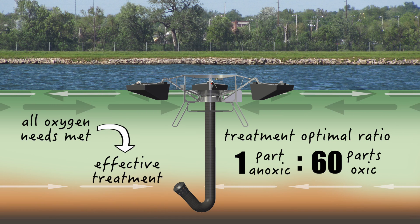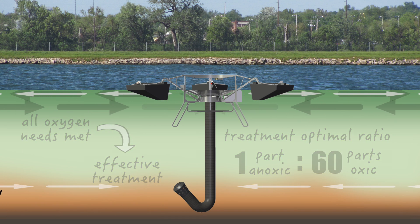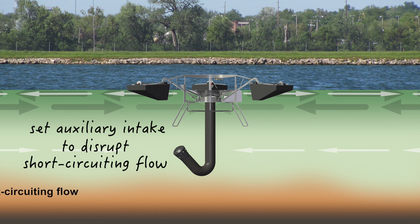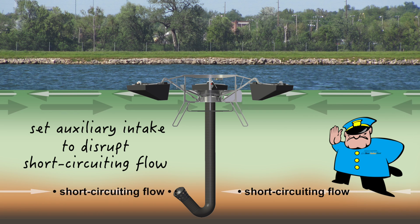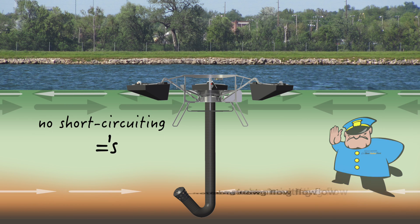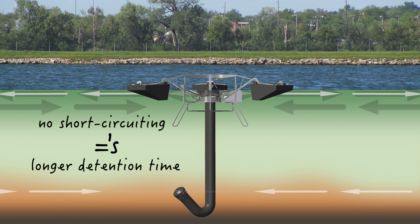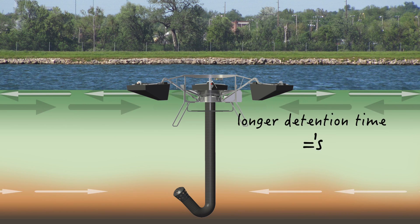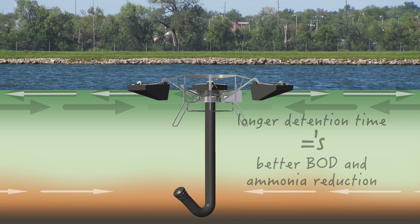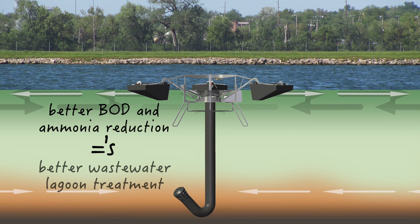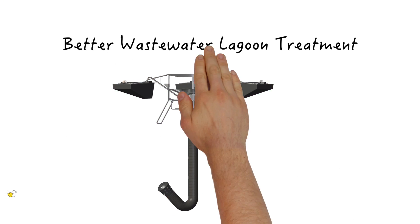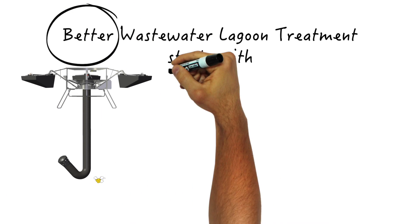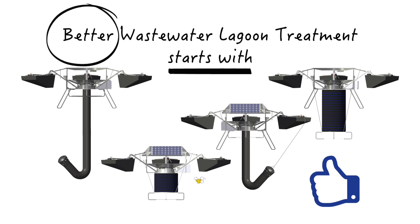This ensures all the oxygen demand needs to treat the incoming anoxic water are met. A deeper auxiliary intake setting near the bottom can also stop any short-circuiting flow between the inlet and the outlet of the lagoon. No short-circuiting means longer detention time. Longer detention time means better BOD and ammonia reduction, which means better wastewater lagoon treatment.